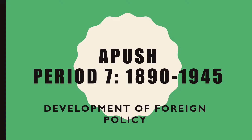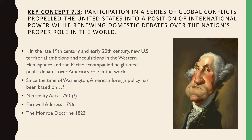Hello, welcome to our YouTube video presentation on Period 7, 1890-1945, the development of foreign policy. The United States is about to emerge as a world power coming into the 20th century. We're going to look at the steps that the United States took in order to become that world leader that they are today, why they did it, and also look at some of the negative consequences that come from that as well.